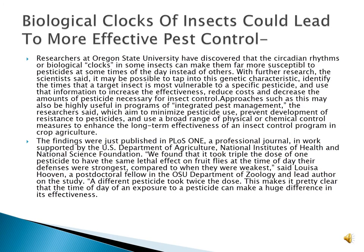Biological clocks of insects could lead to more effective pest control. Researchers at Oregon State University have discovered that the circadian rhythms or biological clock system of insects can make them far more susceptible to pesticides at some times of day than others. With further research, it may be possible to identify the times that insects are most vulnerable to a specific pesticide, and use that information to increase effectiveness, reduce costs, and decrease the amount of pesticides necessary for insect control. Such approaches may also be highly useful in integrated pest management programs, which aim to minimize pesticide use to prevent development of resistance, and use a broad range of physical or chemical control measures to enhance long-term effectiveness of insect control in crop agriculture.